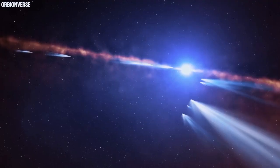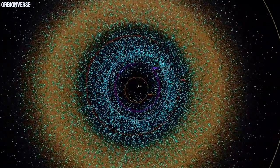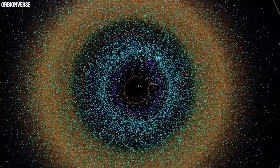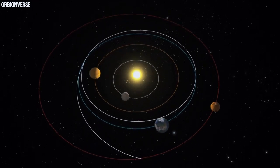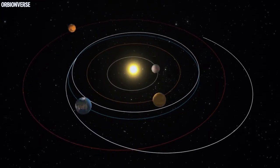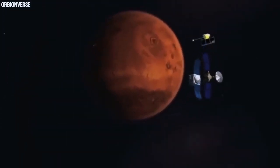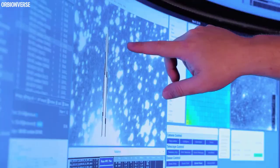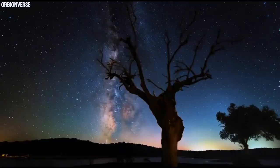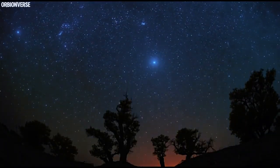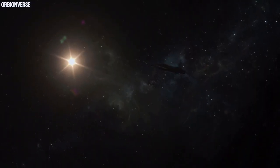So what happens when 3I Atlas, Swan, and Lemon align? No one knows. Some call it coincidence, others a cosmic pattern. But one thing is certain: the solar system hasn't seen this kind of convergence in recorded history. And maybe, just maybe, it's not the comets that are coming closer. Maybe something else is using them as messengers. So when you look up at the sky in the coming weeks and see a faint green light, remember this moment—because whatever is approaching is no longer just a story. It's already here.